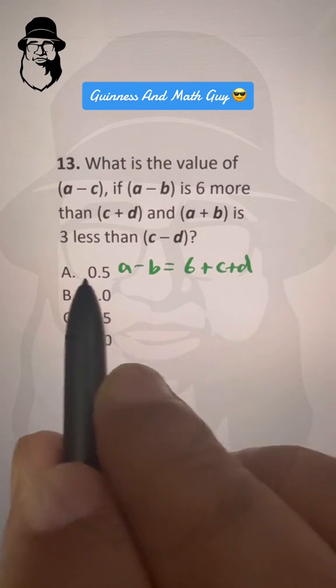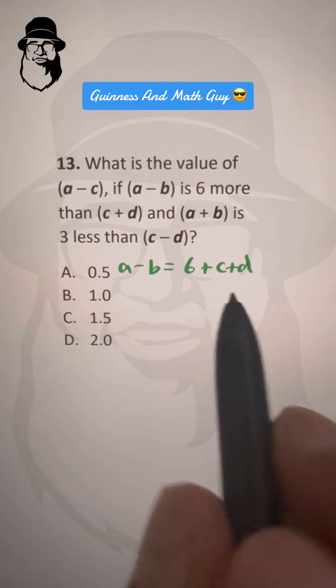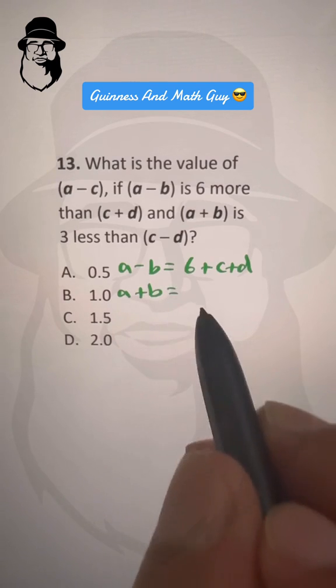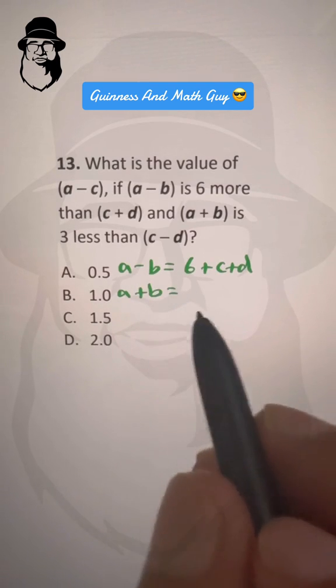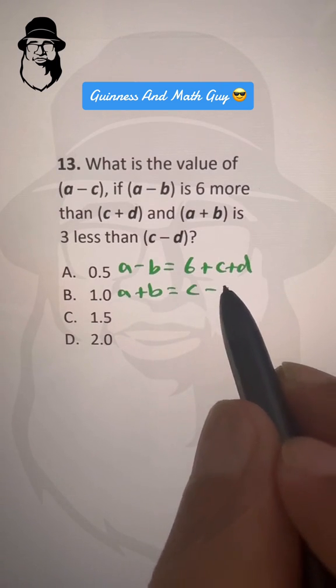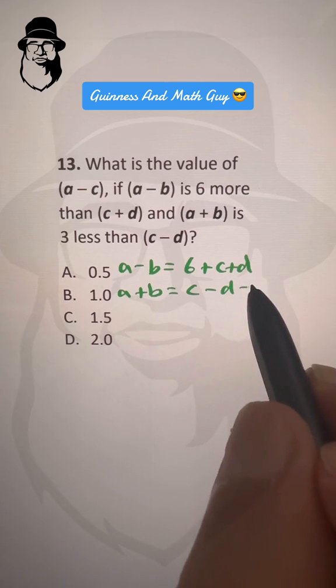And (a + b) is 3 less than (c - d). So (a + b) equals (c - d) - 3.